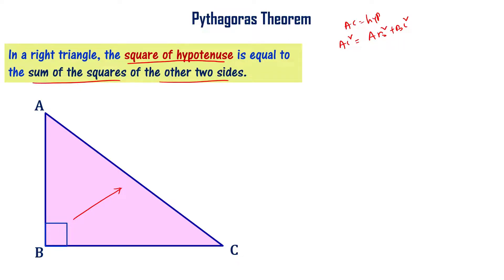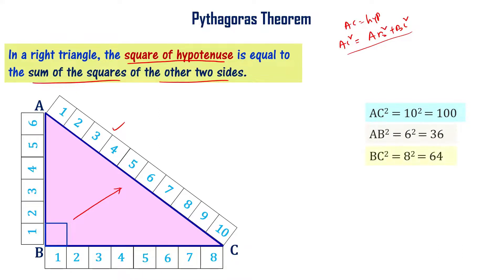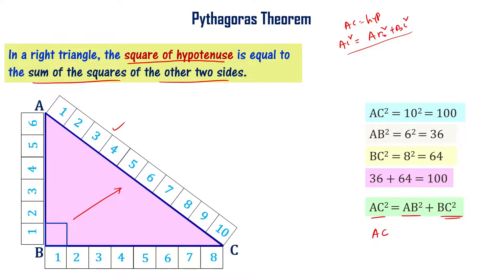Let's verify with an example: AB = 6 units, BC = 8 units, AC = 10 units. AC² = 10² = 100. AB² = 6² = 36, BC² = 8² = 64. And 36 + 64 = 100. So AC² = AB² + BC², confirming the Pythagorean theorem. From this we can also write AC = √(AB² + BC²).